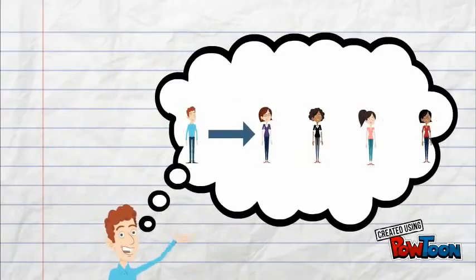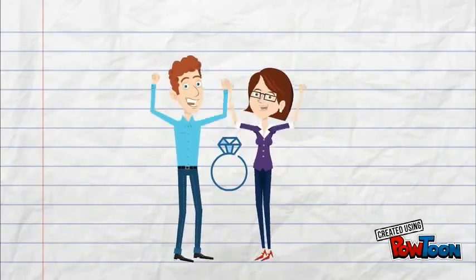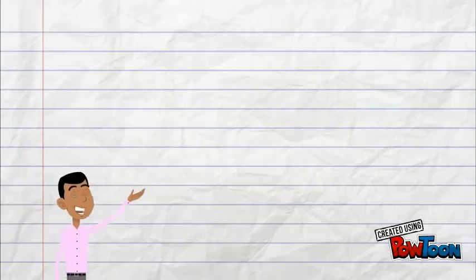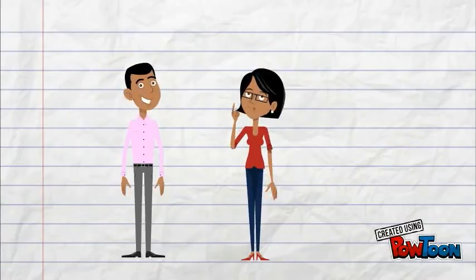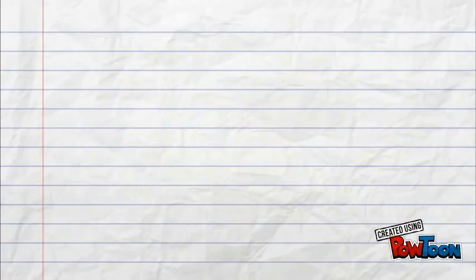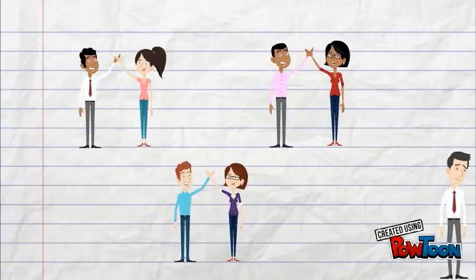It's Matt's turn now to look at his preference list and proposes to the woman at the top of his list, that is, Mary. Since Mary is currently unengaged, she accepts Matt's proposal and they become engaged. Now, Tom proposes to the woman at the top of his list, Anne. She, too, is single and so she accepts Tom's proposal and they become engaged. After round 1, three matches have been made: John with Jane, Tom with Anne and Matt with Mary. However, Jack still is single, so the algorithm continues.